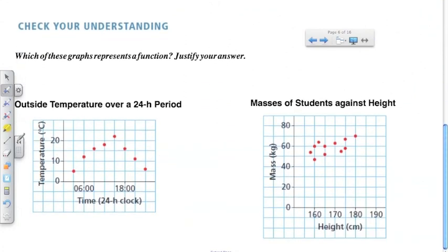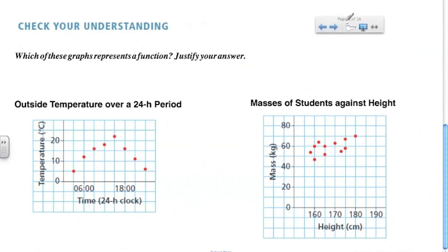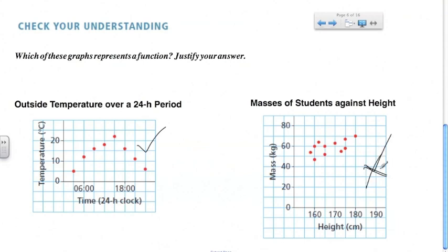Try this yourself — pause the video, take a minute, and then come back. You should be able to tell just by looking: clearly this one is a function because there are no two points on the same vertical axis. And this one is not a function because there are multiple points aligned on the same vertical axis.